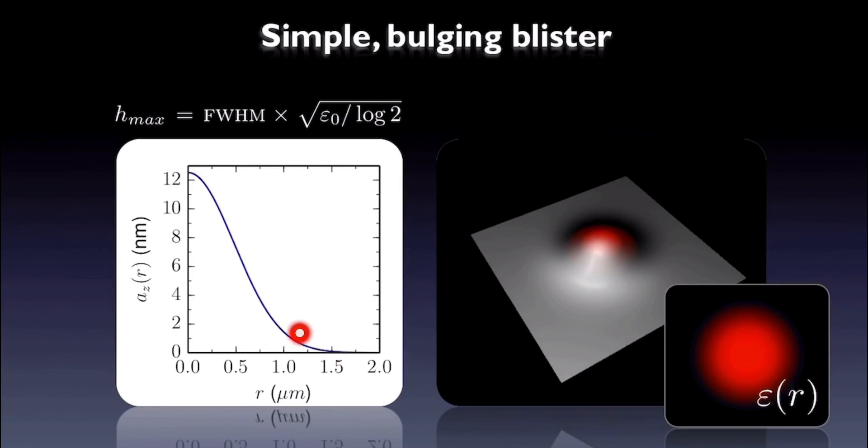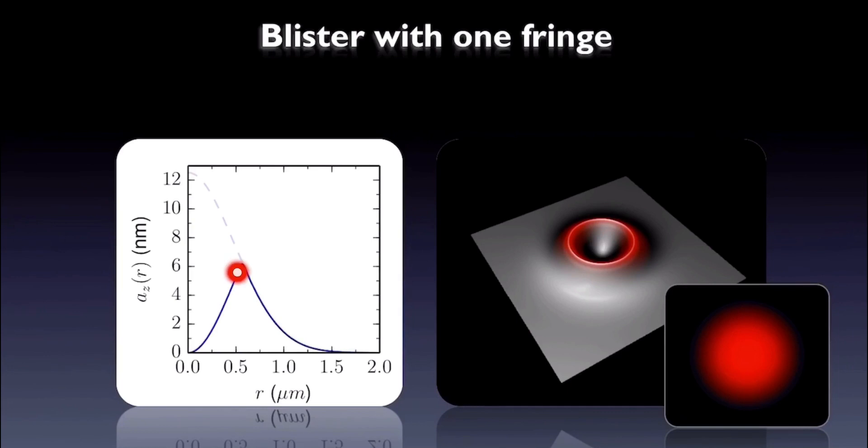We found that with the same expansion field, creating cusps into the profile like this costs very little energy. These cusps make blisters show concentric ripples. And we could create more cusps, resulting in more concentric ripples with very little additional energy.